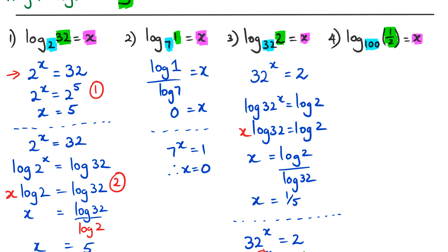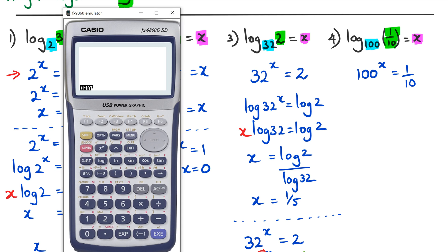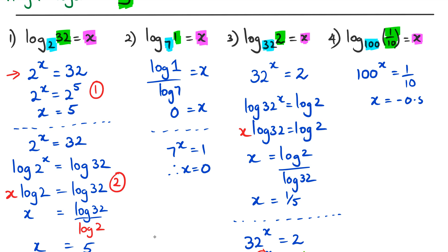Sorry about that — that 2 was supposed to be a 10. Sometimes we make mistakes on the fly! So the corrected question is 100^x = 1/10. Using the calculator: log(1/10) divided by log(100) gives x = negative 0.5.